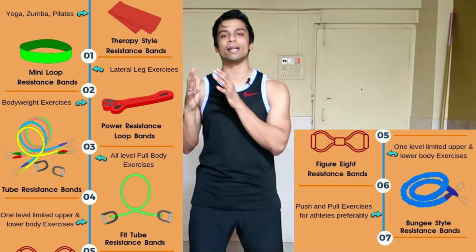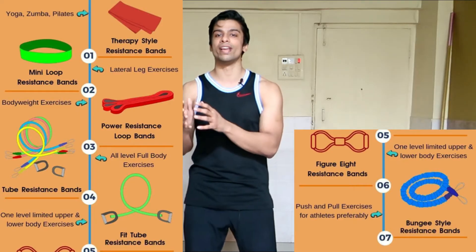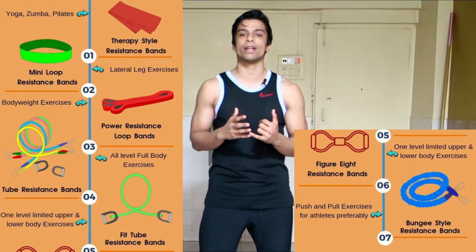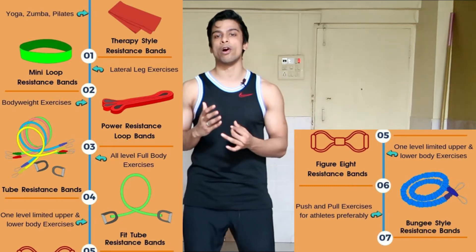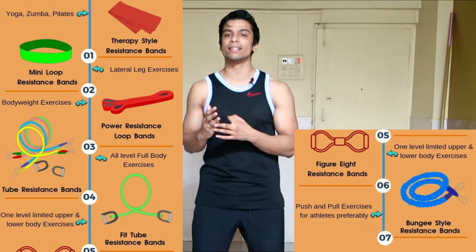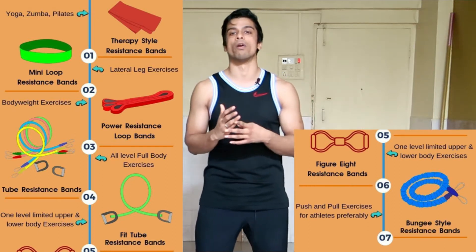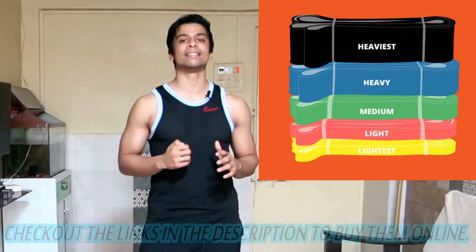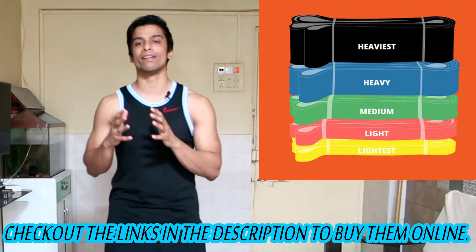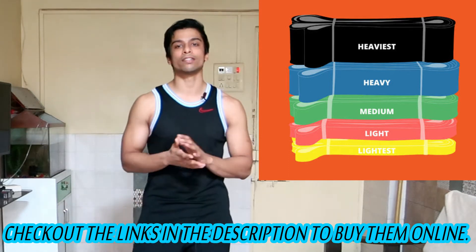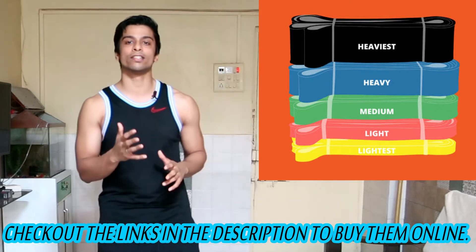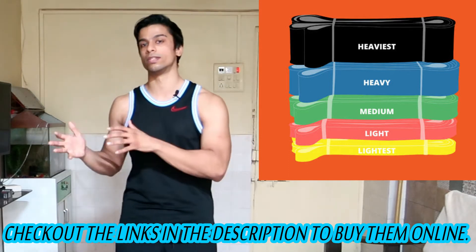Resistance bands come in different variants — they can be in a straight form, a tubular form, with handles, or in a loop form. They also come with different levels of resistance, ranging from the least resistance to the heaviest resistance.